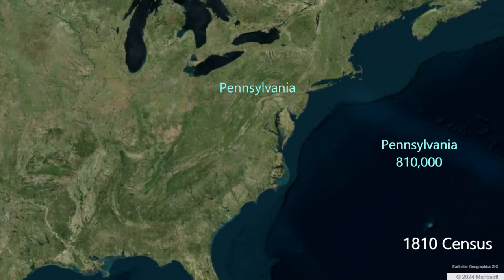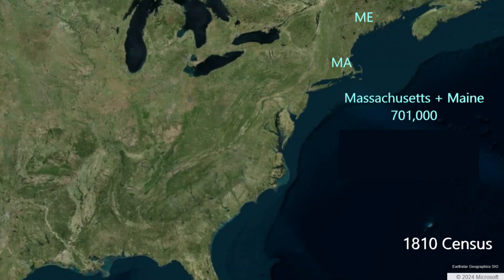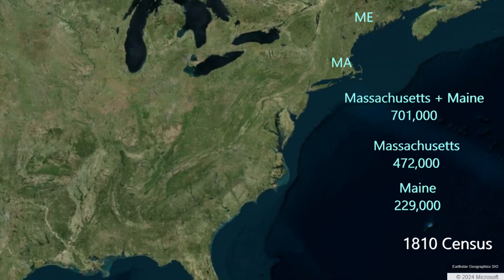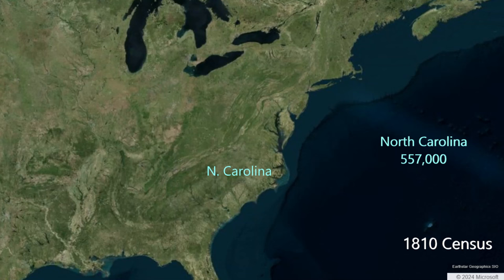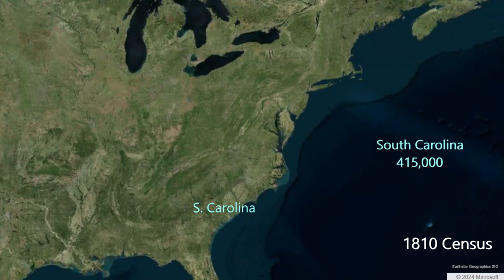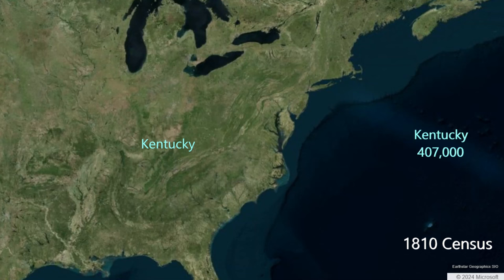Massachusetts in 1810 is a large state by population and geography because Maine is part of Massachusetts at this time. Massachusetts has a total population of 701,000, with 472,000 in Massachusetts proper and 229,000 in the District of Maine. North Carolina is a robust southern state with 557,000 people. South Carolina has 415,000 people in 1810. Kentucky has rapidly developed into a large population by 1810 with 407,000 residents, that newer western state now larger than several of the old eastern states.